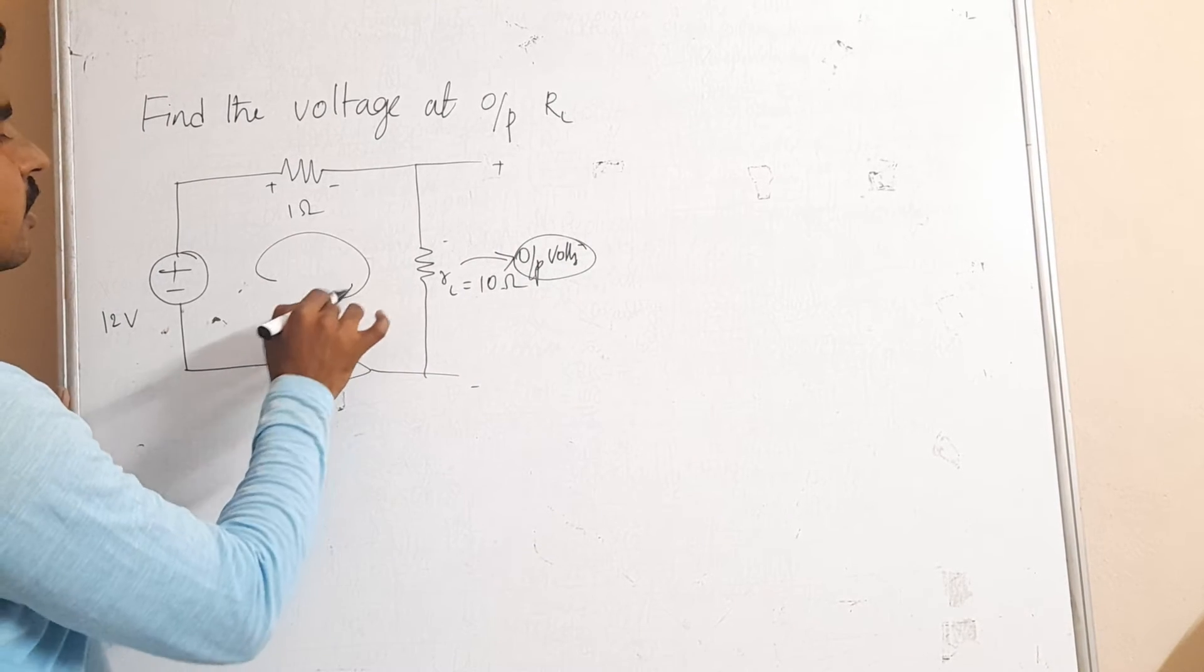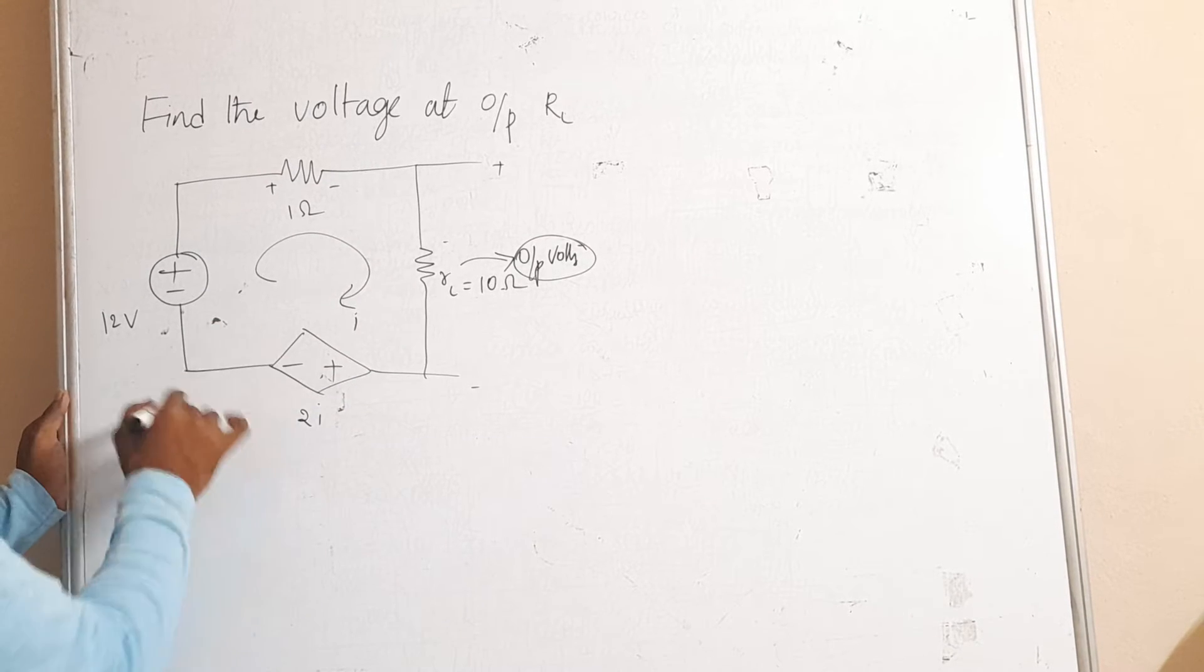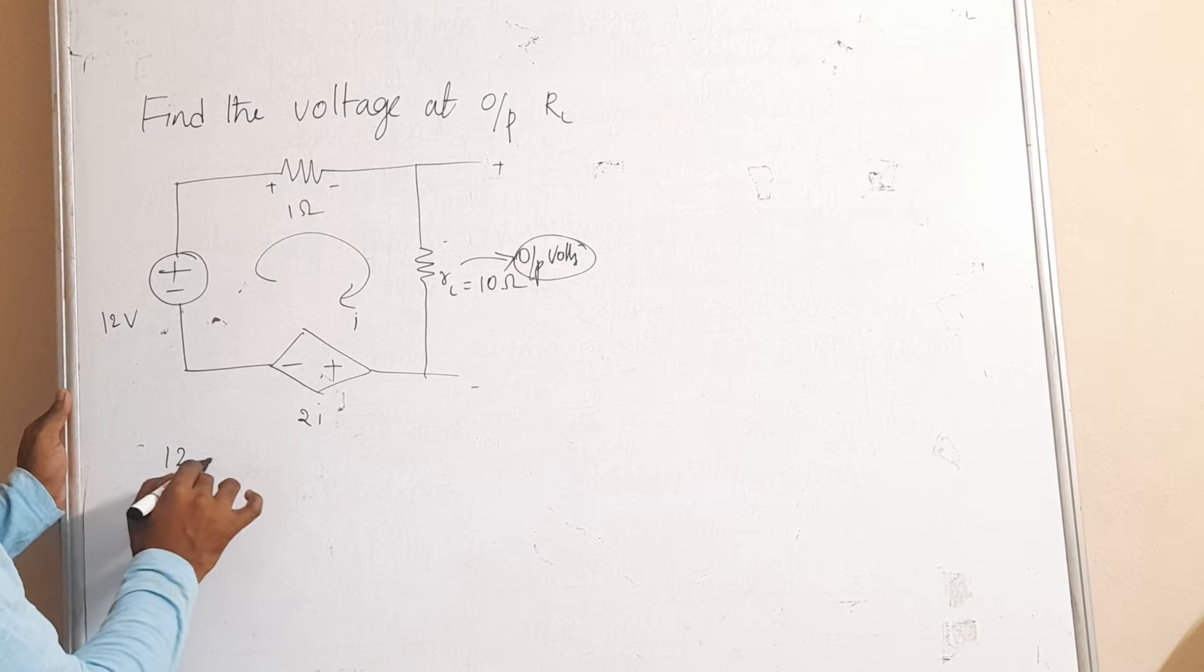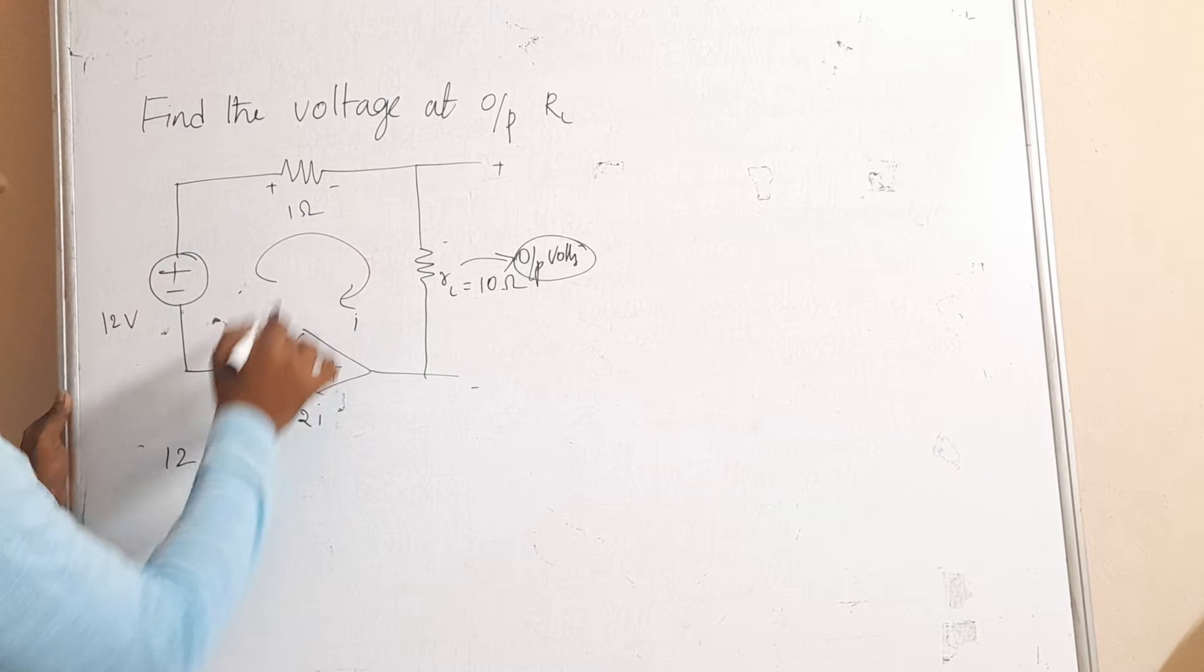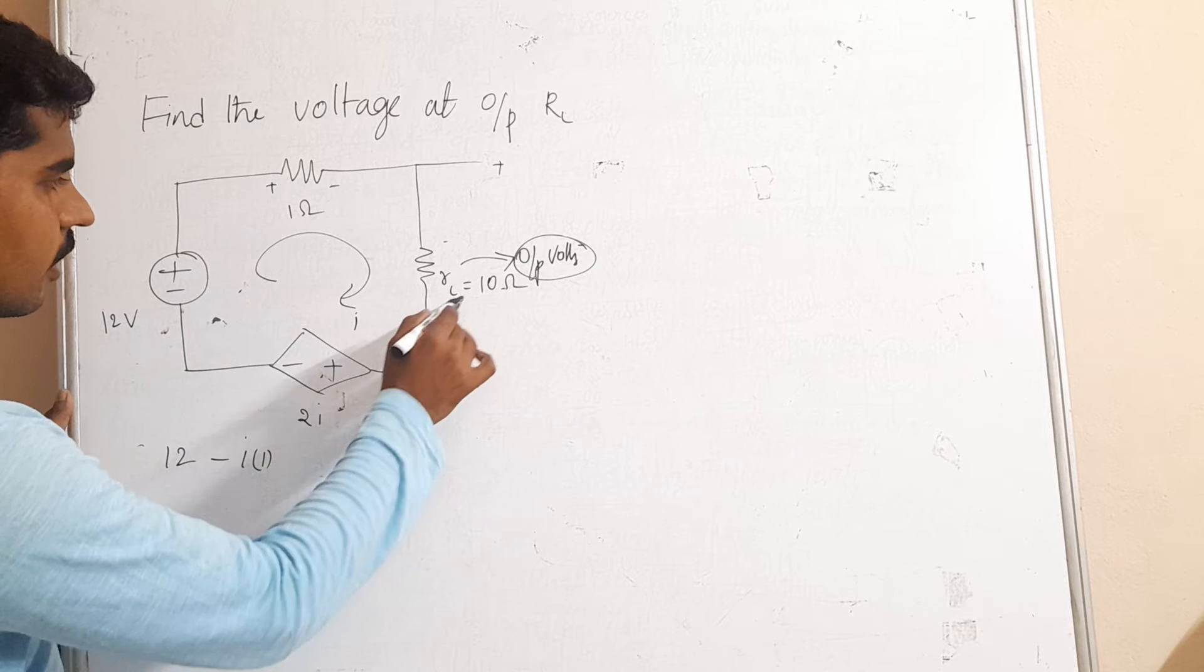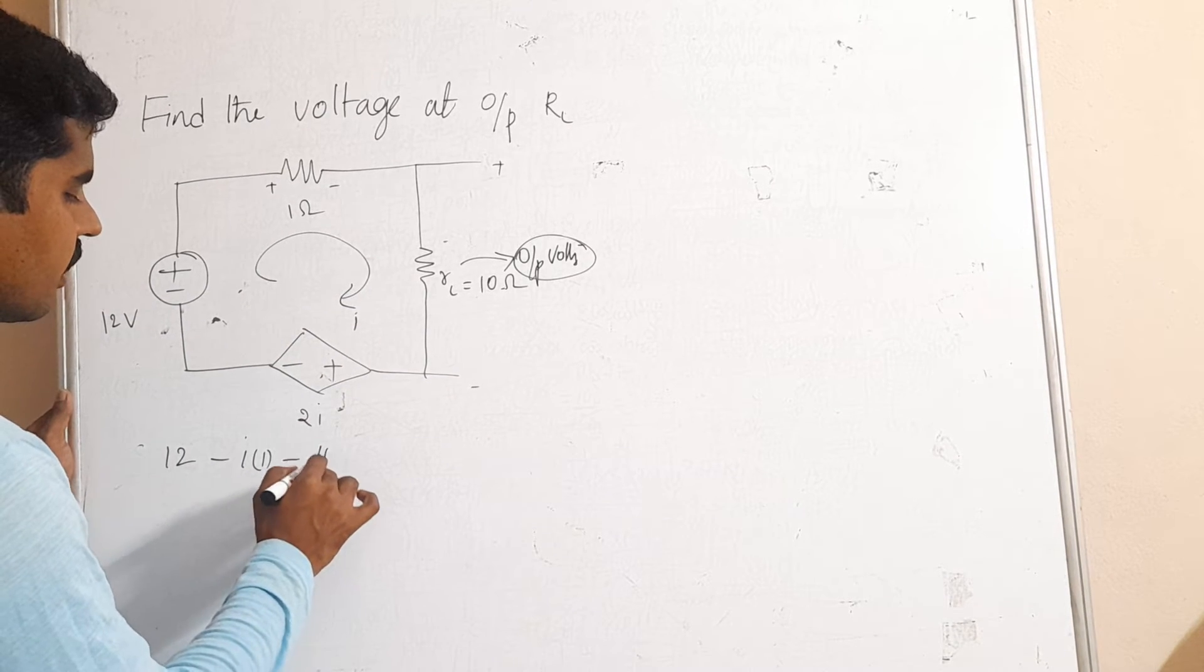Let us consider some current I is passing through the corresponding circuit diagram. By using KVL, it is a rising potential, therefore 12 minus I into resistance value, I into resistance value is equal to IR, therefore I into corresponding resistance value only here is 10 ohm resistance.